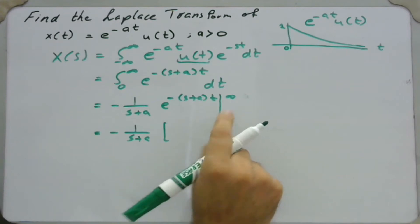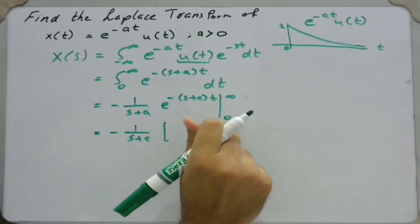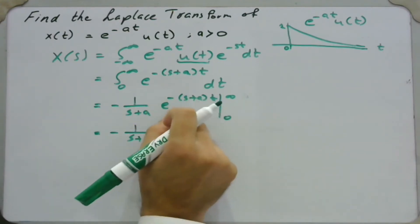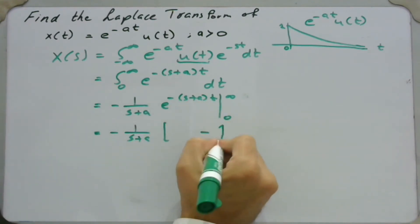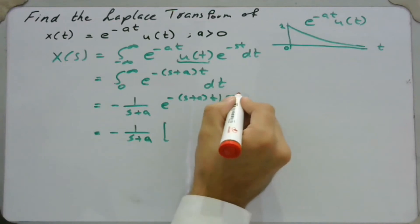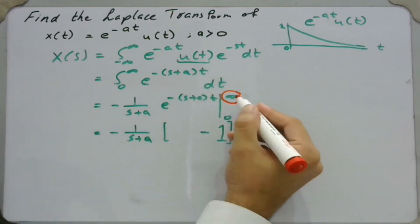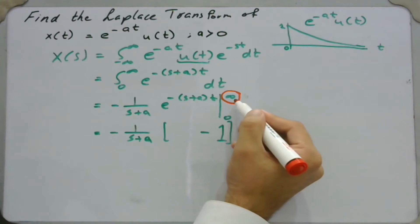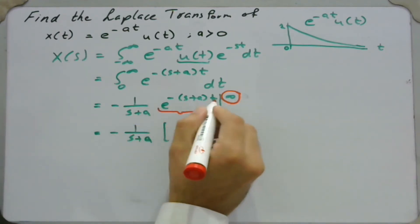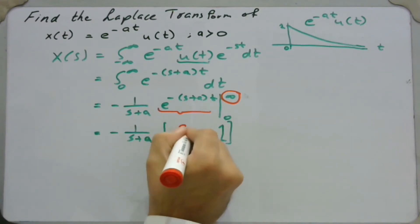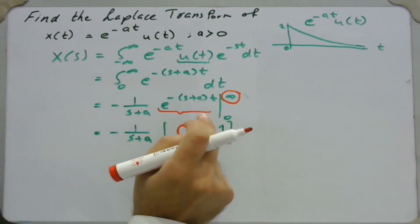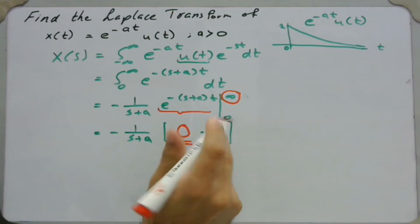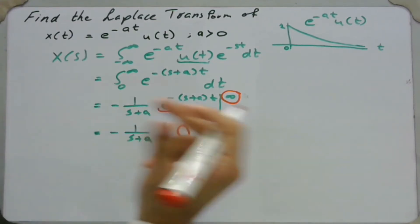Let us put in the limits — first the lower limit as t tends to 0. When t is 0, the exponent is 0 and e^0 is simply 1, so we have 1 here. The Laplace transform is therefore more dependent on the upper limit. So the question is: at time infinity, does this function converge or diverge? If it converges, the function at infinity has value 0; if it diverges, it goes to infinity. This determines the region of convergence.